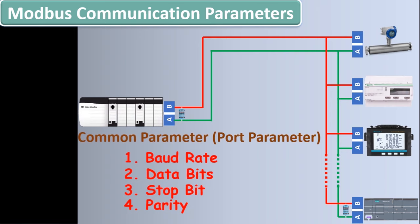Before going toward the Modbus parameters, let me summarize all the RS485 parameters for devices in the same communication network. We call these four parameters the common parameters or RS485 parameters of the devices — all these parameters must remain the same for all devices. For example: baud rate of 9600 bits per second, number of data bits as 8, stop bit as 1, parity as none. Usually these are the default values, but they can be changed.